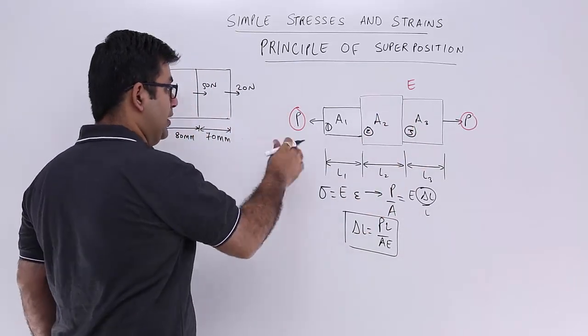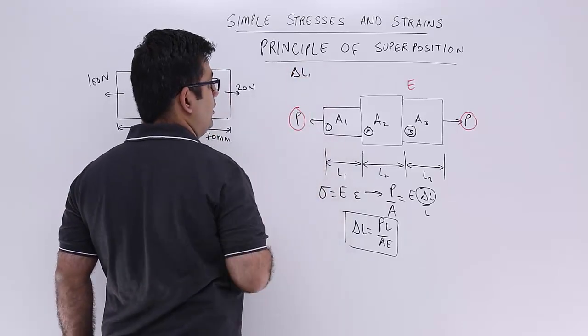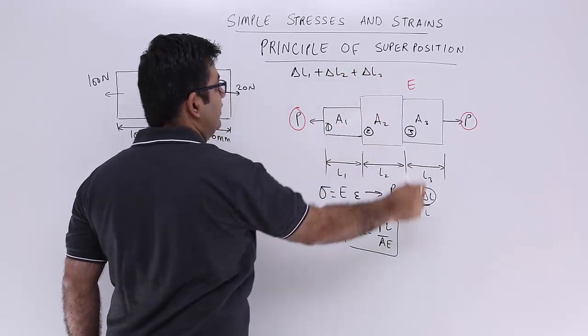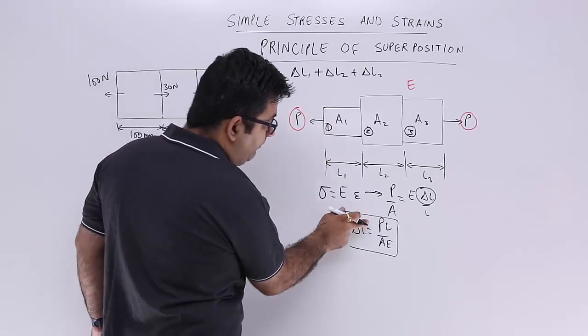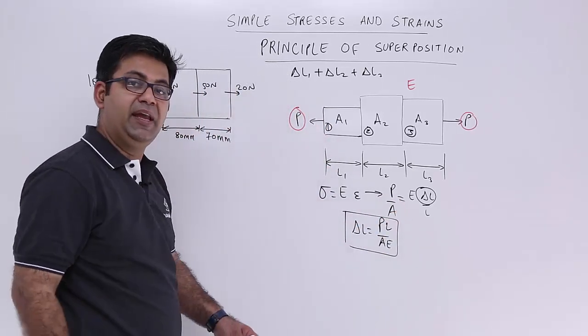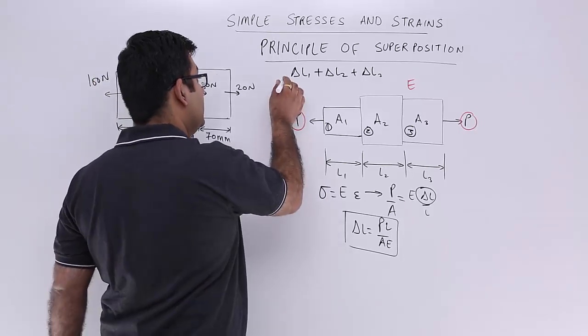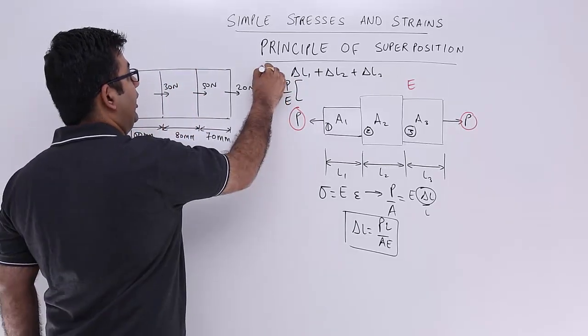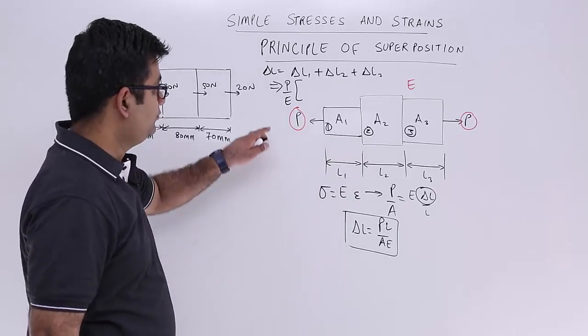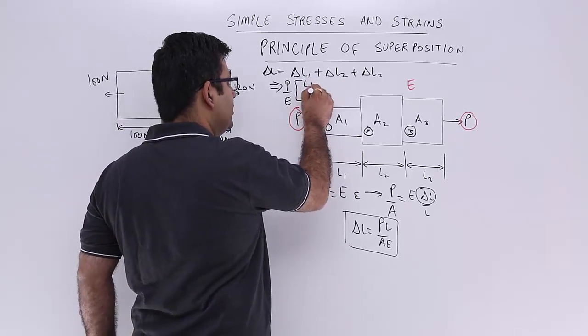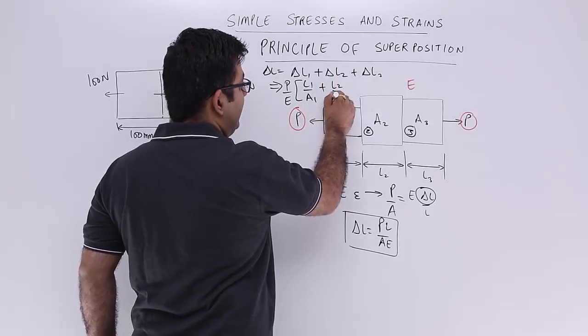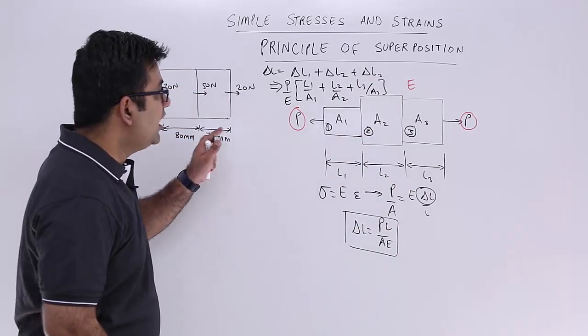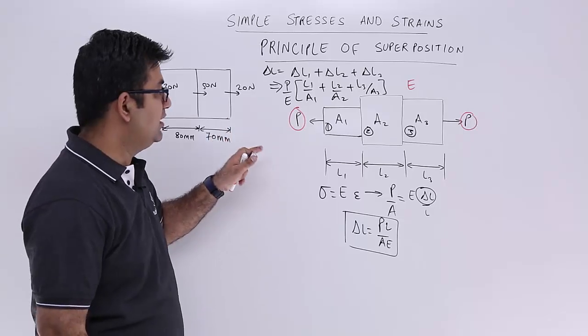Elongation in section 1 is delta L1, elongation in 2 is delta L2 and elongation in 3 is delta L3. So what is delta L1? It will be P L1 upon A1 into E. Now P and E are same. So I can take out P and E to be constant or common values. This is equal to delta L. So this becomes L1 upon A1 plus L2 upon A2 plus L3 upon A3. So this is how you apply the principle of superposition in such a scenario.